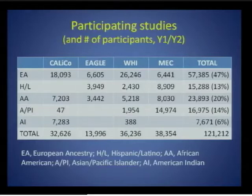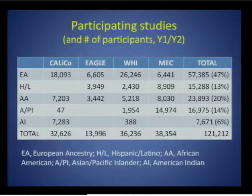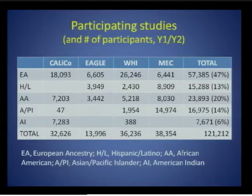Over the first two years, PAGE genotyped about 120,000 individuals, almost half of whom are of European descent, with the remainder distributed across Hispanic/Latino, African American, Asian Pacific Islander, and American Indian individuals.